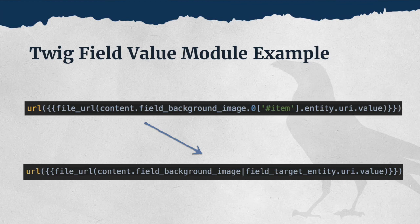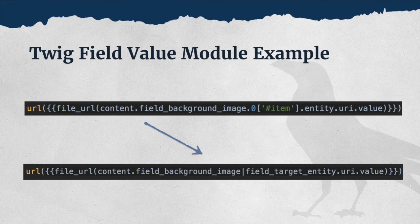A colleague brought the Twig Field Value module to my attention — she's currently using it in one of our Drupal 8 projects. The Twig Field Value module allows themes to get partial data from field render arrays without all the mess of digging into the trenches of potential infinity. Here's an example of how to get the background image field URI value using the Twig Field Value module — no more guessing at missing pieces, just cleanly written Twig variables.